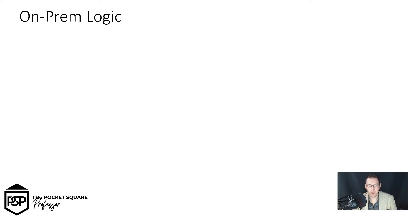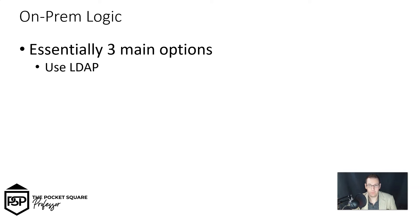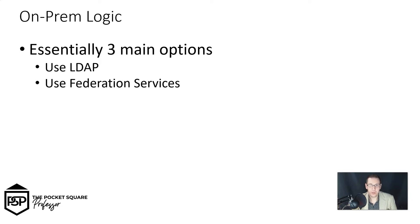On-premise, our current ways of doing it — there are three main options. The first one is using LDAP, which is Lightweight Directory Access Protocol. Not necessarily the most secure; however, it's fine if you're inside the network. We can use Federation Services — specifically Active Directory Federation Services — to essentially publish the application so that it integrates with Active Directory.